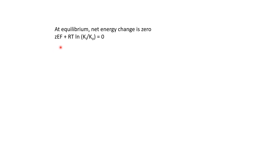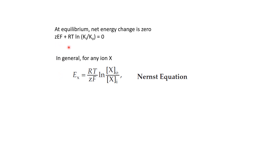We can rearrange these terms to derive the value of E at equilibrium. Moving the terms, we get RT ln(Ki/Ko) on one side with a minus sign. Taking the minus sign inside the logarithm flips the ratio, and dividing by zF gives us the equilibrium potential: Ex = (RT/zF) × ln(Xo/Xi). This equation is valid for any ion, not just potassium — for sodium, we put in sodium concentrations and the charge of sodium to get the equilibrium potential for sodium.